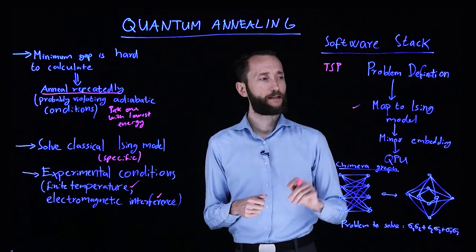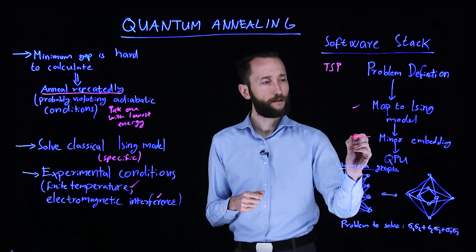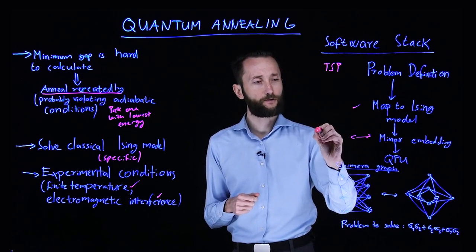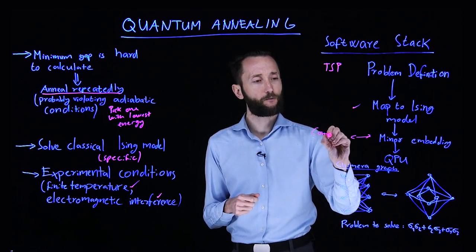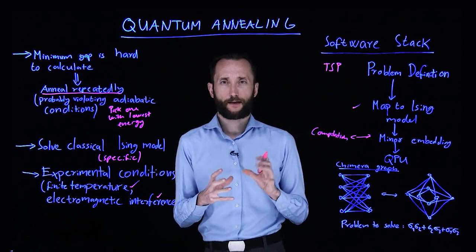And then what we have to do is something called a minor embedding. So this step corresponds to the compilation in the gate-model architecture. So in compilation, several things are going on.